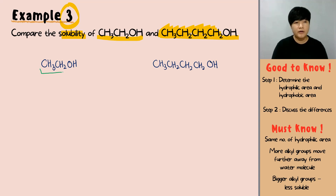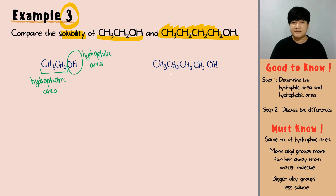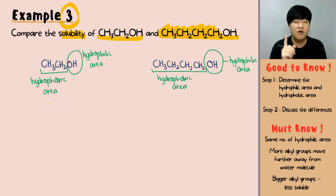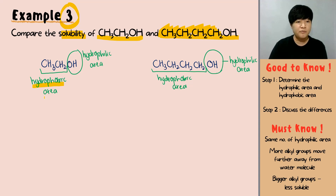For ethanol, the CH3CH2 is clearly the hydrophobic area, and OH is the hydrophilic area. For butanol, the four-carbon chain is the hydrophobic area (the alkyl group), while the hydrophilic area is the same OH group. Both have the same hydrophilic area in type and number, so we compare the differences — which in this case is the hydrophobic area.